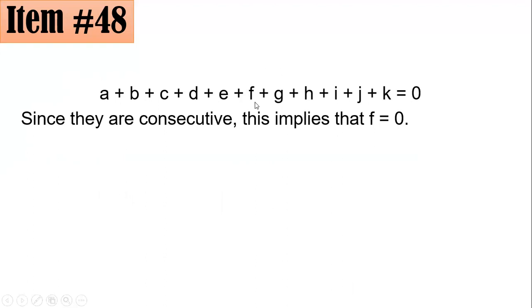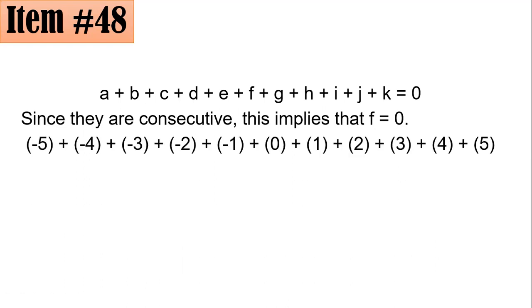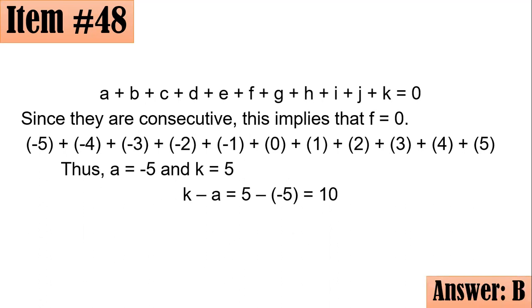And if you go to the left, you subtract by 1, because consecutive numbers differ by 1. If you go to the left, subtract by 1, negative 1, negative 2, negative 3, negative 4, negative 5. And if you go to the right of f, you add by 1, 1, 2, 3, 4, and 5. Hence, we could say that the numbers that we're looking for, it's the sum of negative 5 plus negative 4 plus negative 3 all the way until 5, based on the given. And this follows that a is negative 5, and k is positive 5. And k minus a is 5 minus negative 5, which becomes 5 plus 5, or simply 10. And that is letter B. I hope you got 10 correctly.